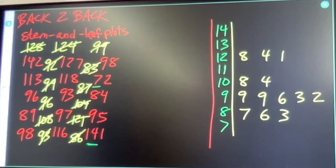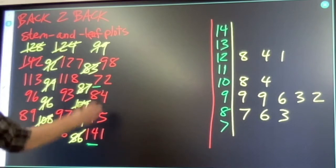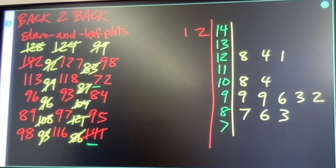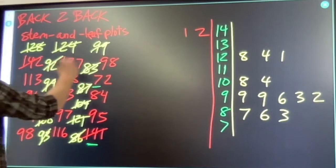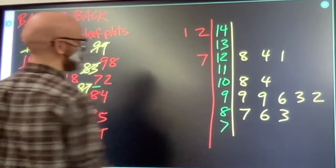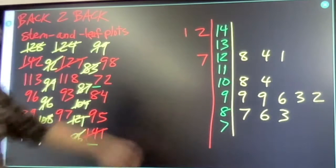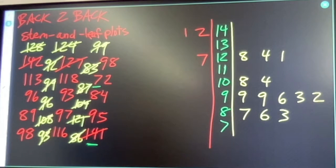We got 142, 141. 127. There are no 130s, but we still keep the 13 there as a place holder. We got 118, 116, 113.